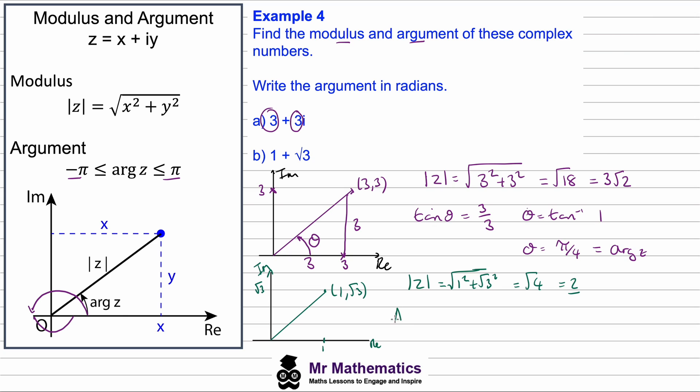And then the argument of z we can work out using tan θ as the opposite, so √3 over 1. So θ will be the arctan of √3, which in radians is π/3. So 2 is our modulus and π/3 is our argument.